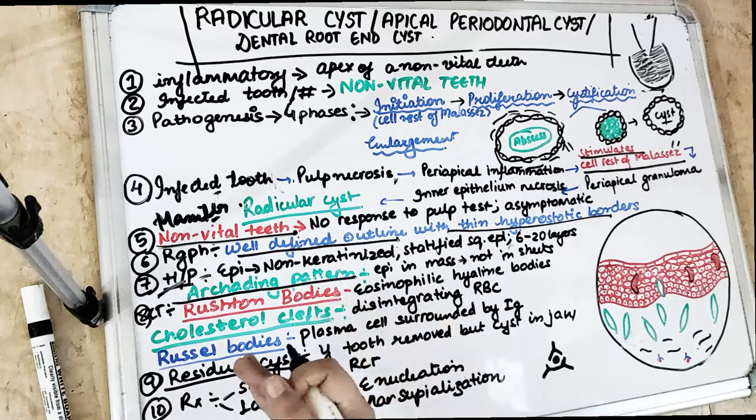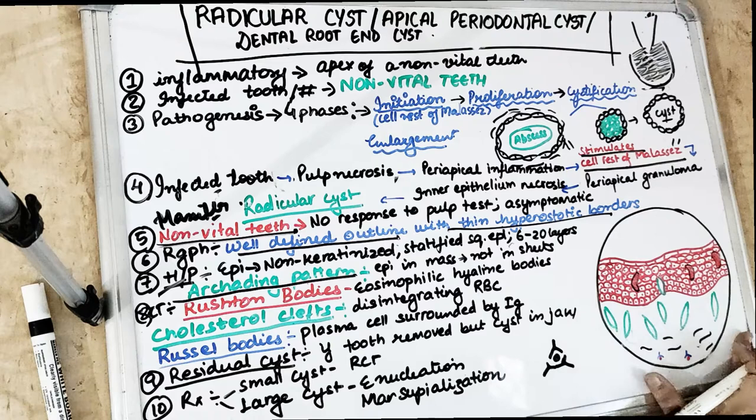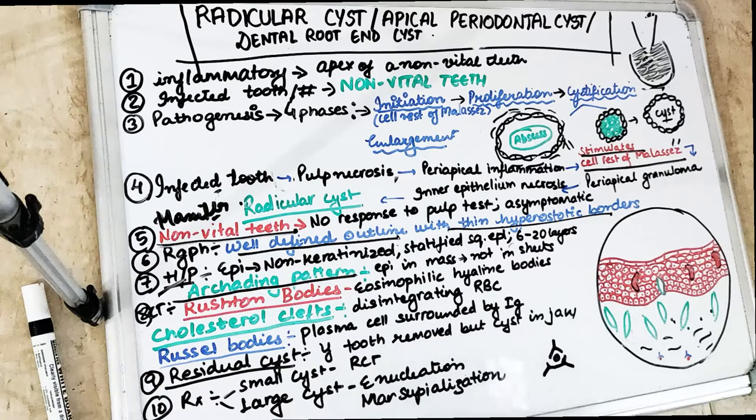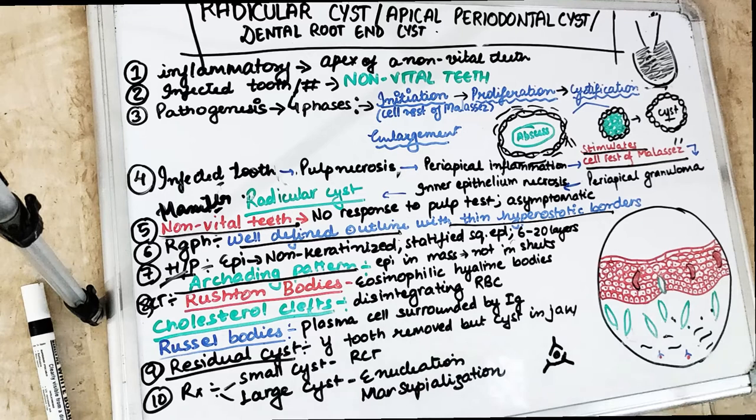If the tooth is extracted and the cyst remains in the jaw, it is called a residual cyst. For treatment: if it is a very small cyst, root canal treatment can be done. If it is a large cyst, enucleation and marsupialization are performed. That covers the radicular cyst, also known as the apical periodontal cyst or dental root end cyst.